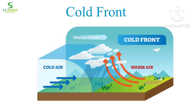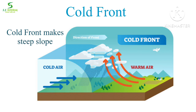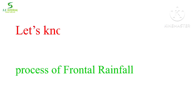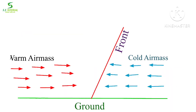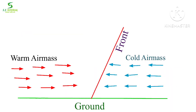When the cold air mass moves faster towards the warm air mass and pushes the warm air mass to rise upward, this type of front is termed a cold front. Cold front makes an almost steep slope. Now it is very easy to understand how frontal rainfall occurs.